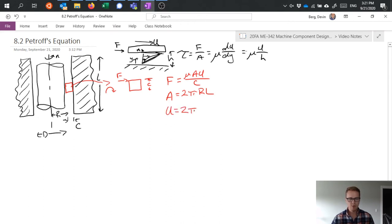And then I can calculate viscosity as 2πRn if I say n is my rotation in revolutions per second. This would be my surface velocity that I'm experiencing.